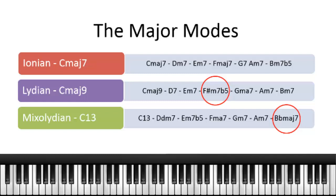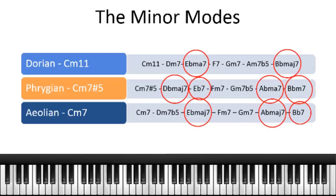That was the major mode types. Now let's look at the minor mode types. For the Dorian mode — the C Dorian mode, which would be the C minor Dorian scale — it introduces two tones not in the parent scale. All the other bass notes are in the parent scale except for the third, which is E flat, and the seventh, which is B flat.